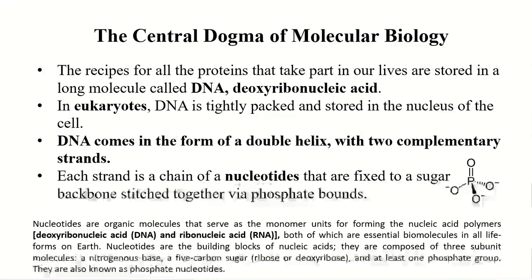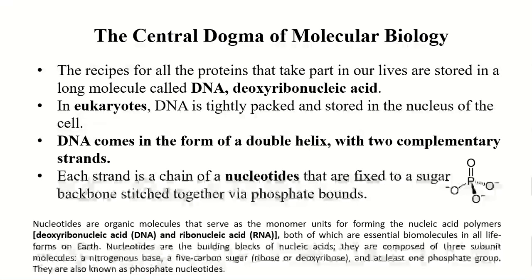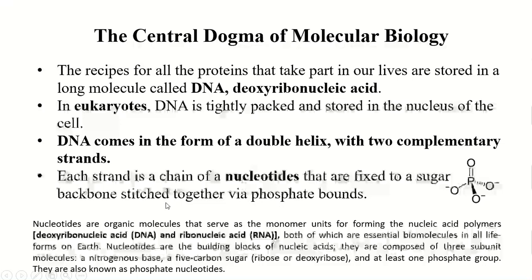What are nucleotides? ATGC — these are fixed to a sugar backbone. Nucleotides are fixed similarly to how amino acids are joined in their chemical structure. Amino acids have three components: a carboxyl group, an amino group, and a side chain. Similarly, DNA structure is stitched together via phosphate bonds.